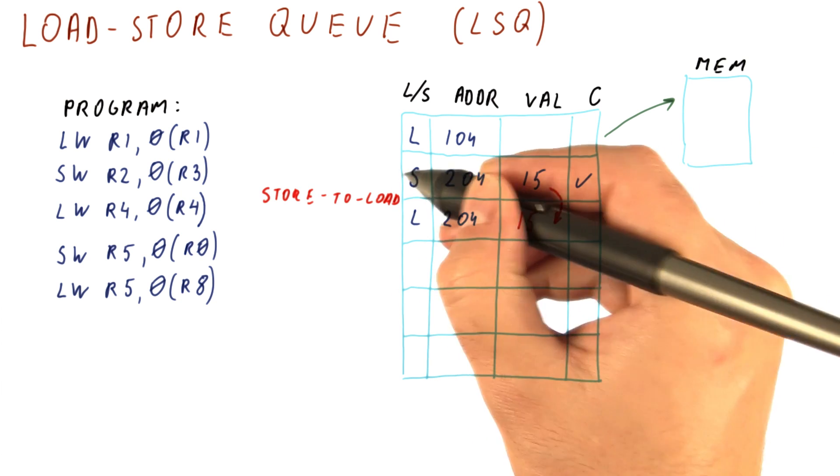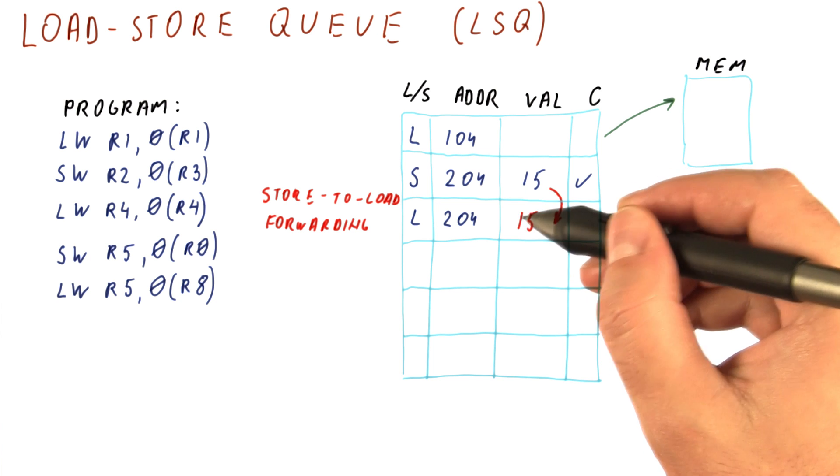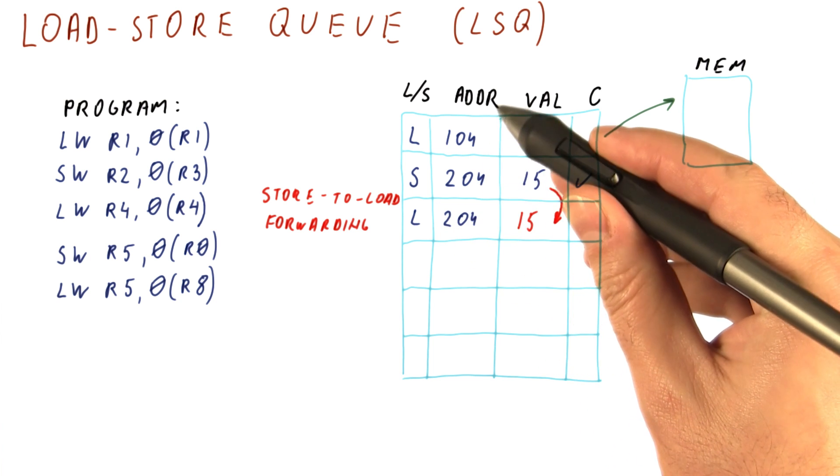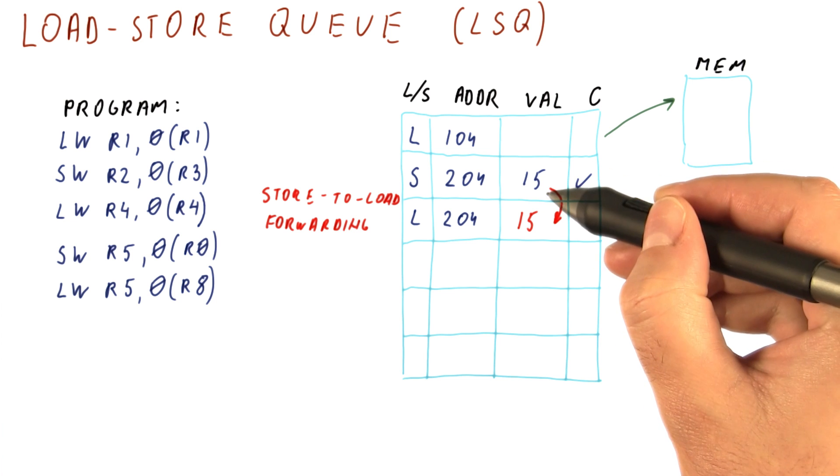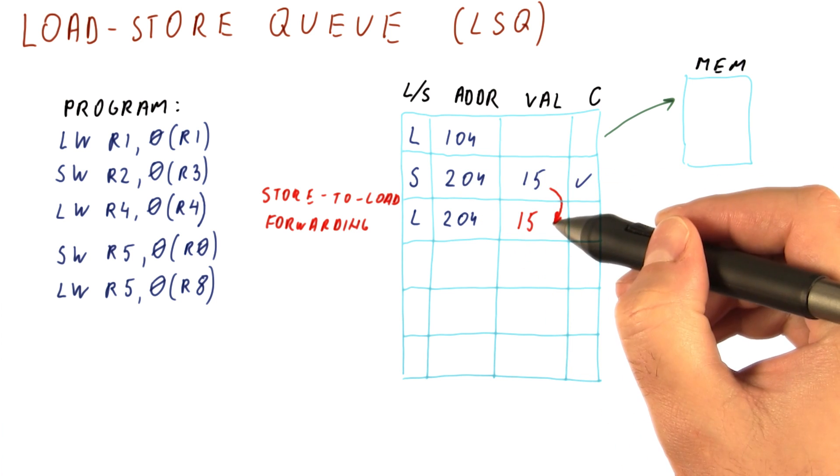So again, this is called store to load forwarding. Now, of course, this assumes that at the time we want to do this load, the stores have already been completed and we now know what the addresses are. And if we need to get the value, we know what the value is.